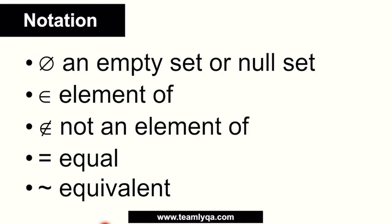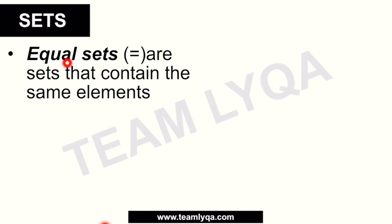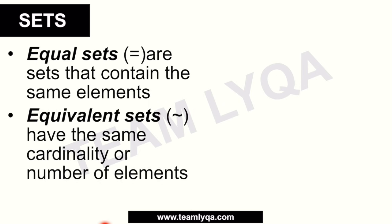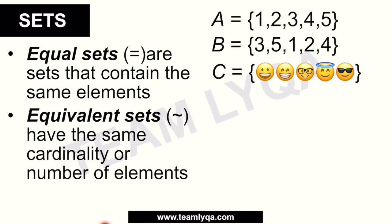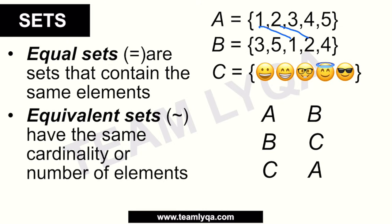If that sounds complicated, let's break it down. Equal sets are sets that contain exactly the same elements. Now, we have three sets: set A with elements 1, 2, 3, 4, 5; set B with elements 3, 5, 1, 2, 4. If you notice, all the same numbers are present in both — 1, 2, 3, 4, and 5. They have the same cardinality of 5 and the same elements. So A and B are equal sets, marked by the equals symbol.